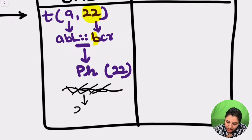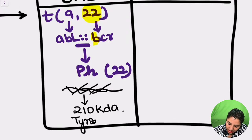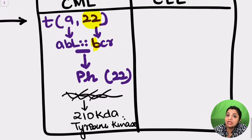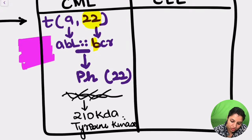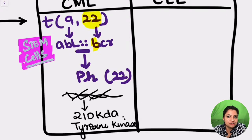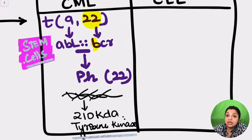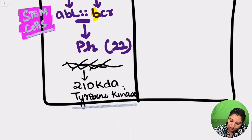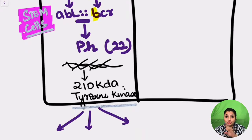The Philadelphia chromosome produces an RNA transcript, and the resulting protein is of approximately 200 kilodaltons. This causes an increase in tyrosine kinase activity. An important point to remember: this mutation occurs in stem cells. The cell of origin for CML is always the stem cell. This increased tyrosine kinase activity drives a signal transduction pathway, causing proliferation of all cells.